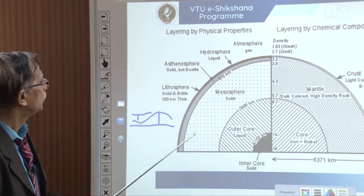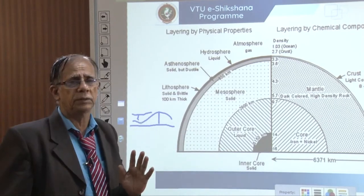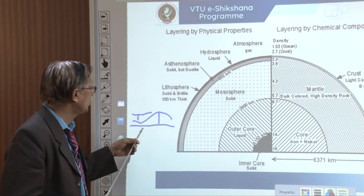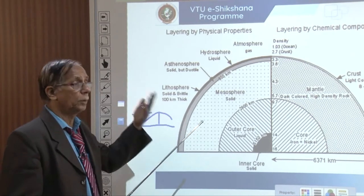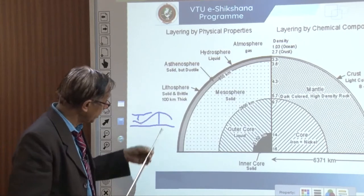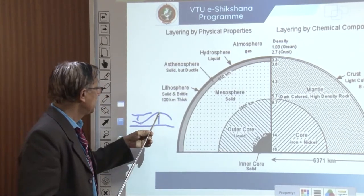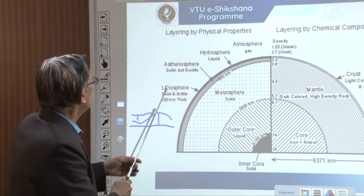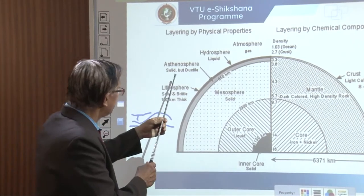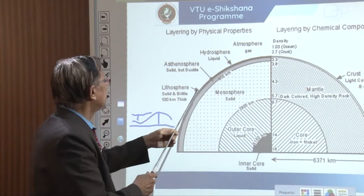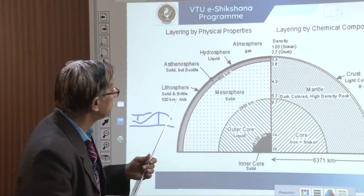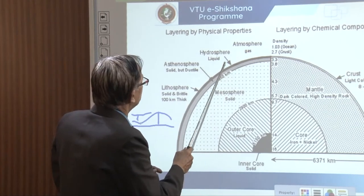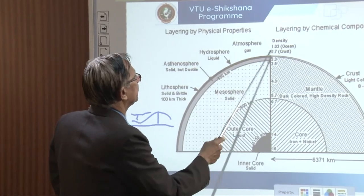The crustal average thickness is 40 kilometers — below the sea it may be 6 to 12 kilometers, below land up to 60 kilometers. The crust is a brittle material. Below it is the asthenosphere, which is solid but ductile and plastic-like in nature, with very low shear stress. Then we have the hydrosphere — the sea — and the outermost layer is the atmosphere.